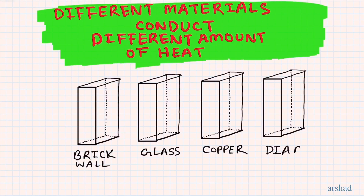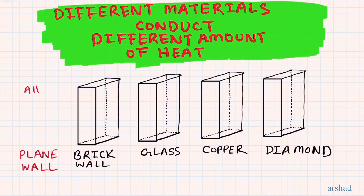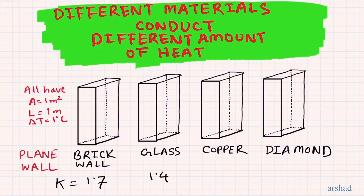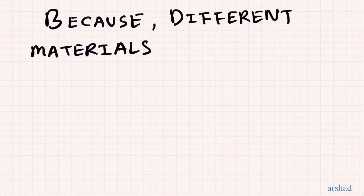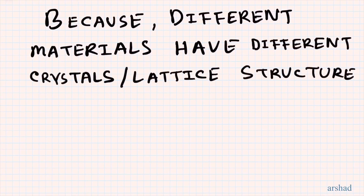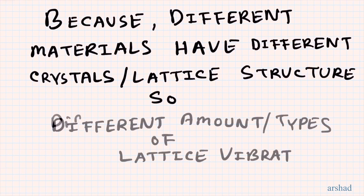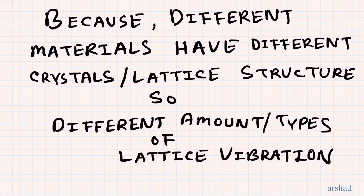Let's take four materials: a brick wall, a glass wall, a copper wall, and a diamond wall. We make sure they are all plane walls with the same cross-sectional area of one meter squared, the same thickness of one meter, and the same temperature difference. Their thermal conductivity values are 1.7, 1.4, 401, and 2300 watts per meter degree Celsius respectively. Different crystal or lattice structures cause these differences.